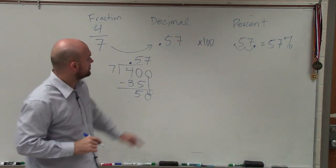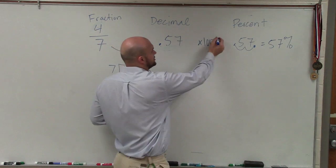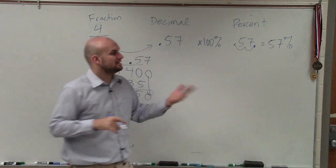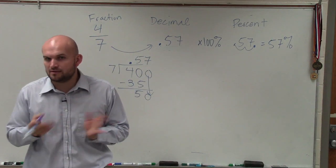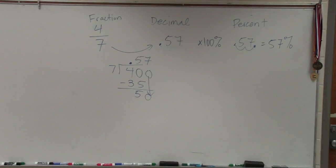OK? So to go from a decimal to a percent, just multiply by 100%, and then that gives you 57%. Anybody have any questions on that? No? It's fairly basic. I think the hardest thing for most students to get is going.